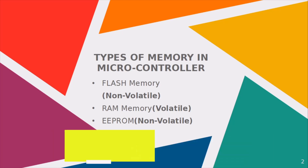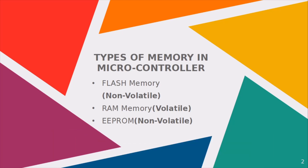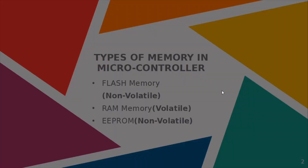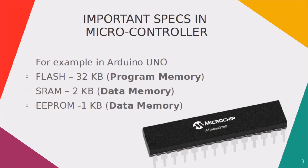Now just take a look over here. Here you can see the ATmega328p chip. We can find this chip in the famous development board called the Arduino Uno, and these are all its memory specifications. It has a flash of 32 KB, static RAM of 2 KB, and EEPROM of 1 KB.